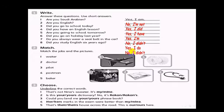Exercise 2. Match the jobs and the pictures. This is the waiter. Number one. Doctor. Picture E. A pilot. Picture A. Postman. Picture D. And a baker. Picture B.